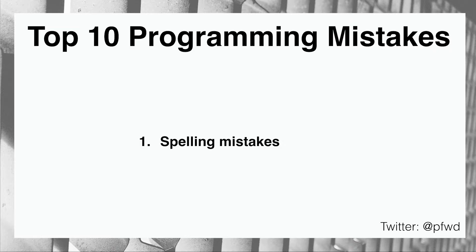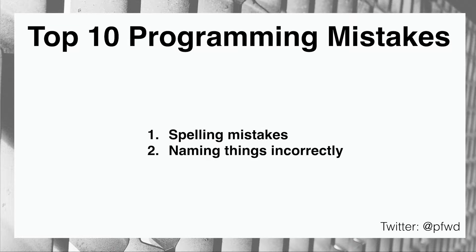Number two is naming things incorrectly. You may have seen a meme about one of the most difficult things a developer does being deciding on the name of what they're building — the name of a function, a class, an interface, a variable, and so forth. It's partly true because it's a very important thing in programming.